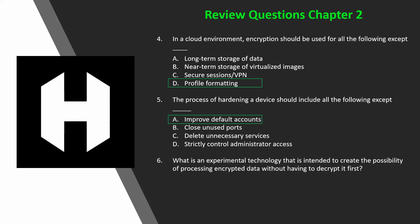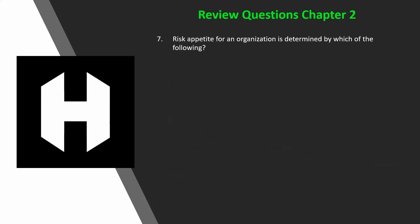Question 6: Which is an experimental technology intended to create the possibility of processing encrypted data without having to decrypt it first? A) homomorphic, B) poly-instantiation, C) quantum state, or D) gastronomic. If you said A, homomorphic, you would be right. That type of encryption hopes to achieve exactly that goal. All other options have almost nothing to do with encryption.